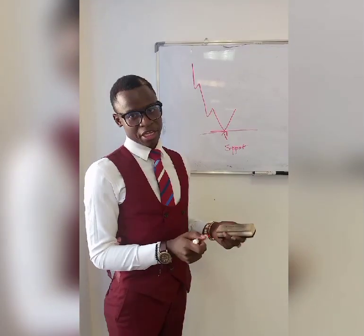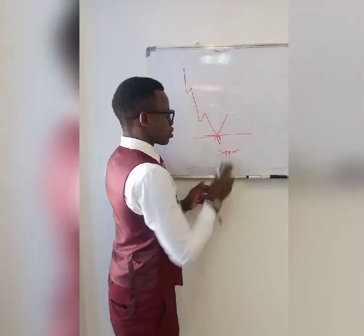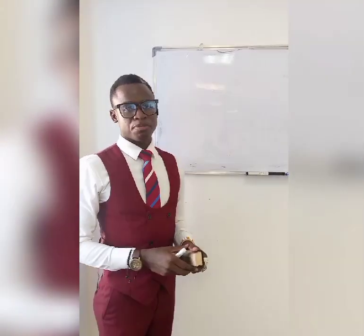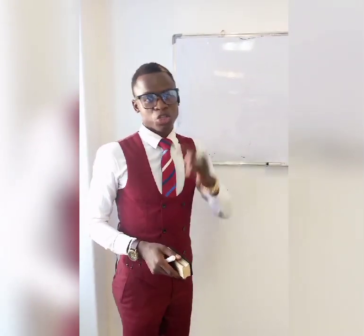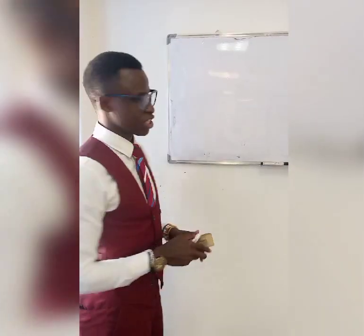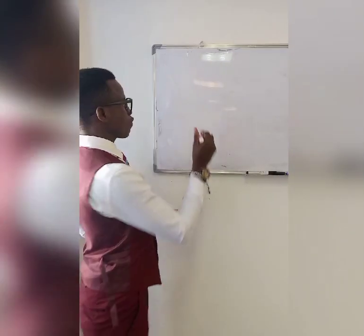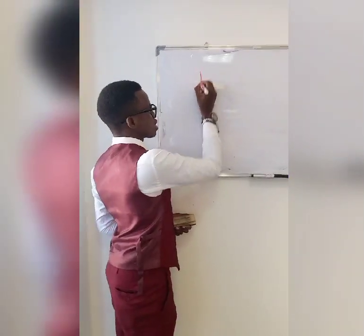We call this area a support: a particular area where the price was going down but failed to go below that area. As a good trader you must be able to identify support — it will help you gauge what the price is going to do next. Now, how do you identify a strong support? One key thing: a support must have been a resistance before.